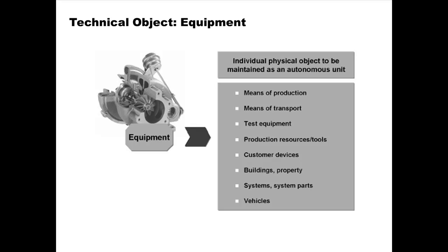Equipment, as a technical object, can be a means of production such as a lathe, a means of transport such as a forklift truck, car, truck, or van, test equipment such as a meter or scope, a production resource or tool, or even customer devices — devices belonging to the customer sent in for repair or maintenance. Buildings, systems, system parts, and vehicles can all be considered equipment for plant maintenance purposes. Equipment is installed in a functional location.